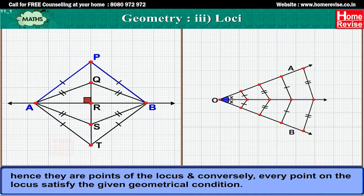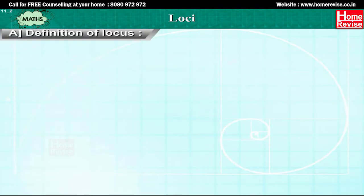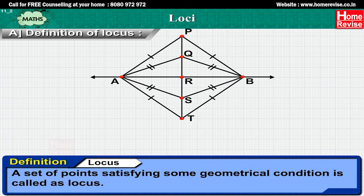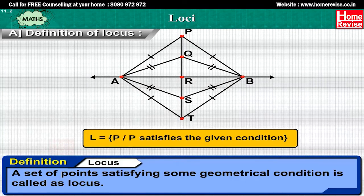Hence they are points of locus, and conversely every point on the locus satisfies the given geometrical condition. Definition of locus: a set of points satisfying some geometrical condition is called locus. Since locus is a set of points, we write locus as L = {P}, where P satisfies the given condition.